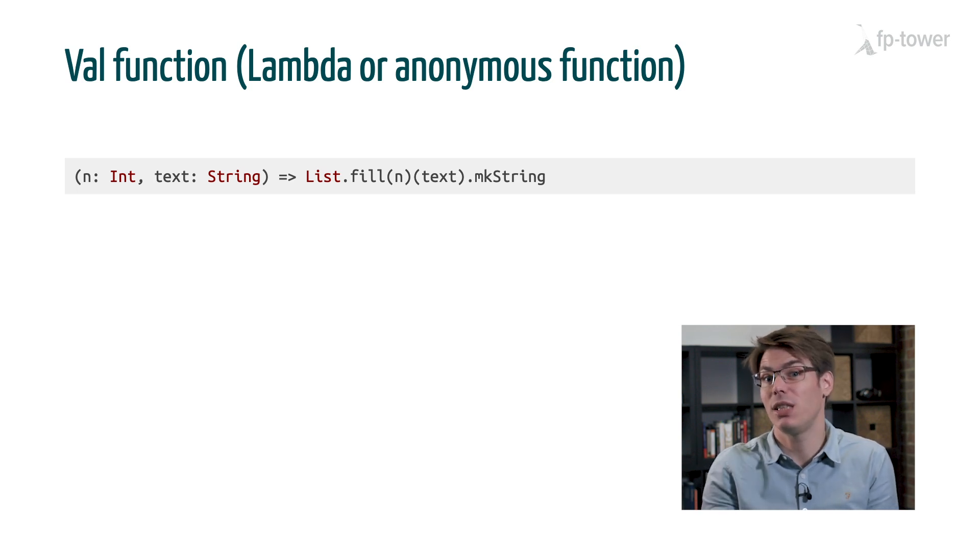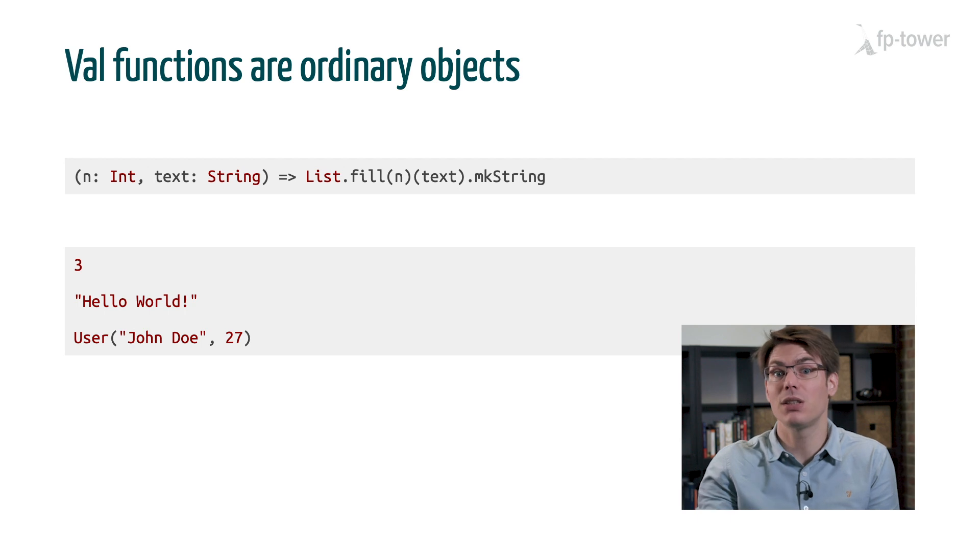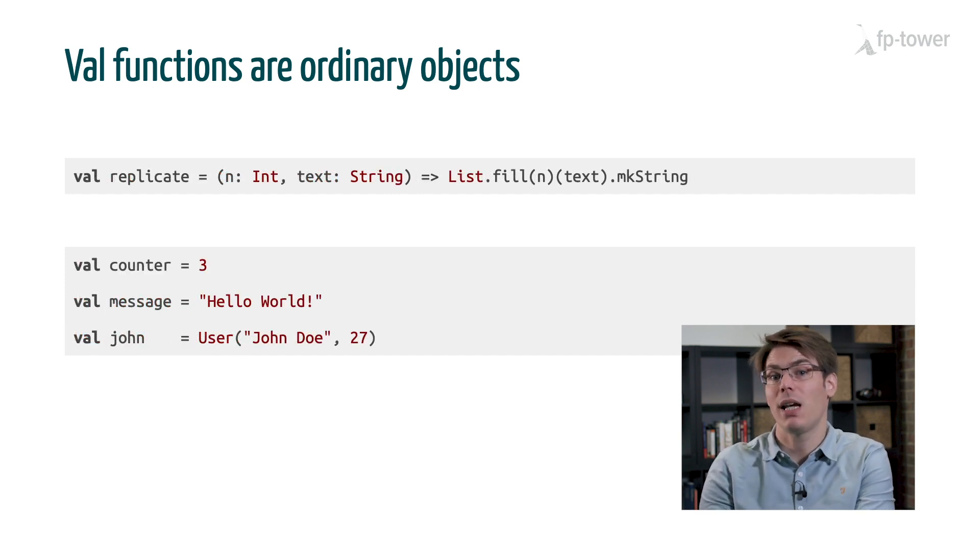In a sense, it's exactly the same as an int or a string or an instance of a case class. To give it a name, we need to use a standard value syntax. For example, val replicate equals our anonymous function, val counter equals three, or val message equals hello world.